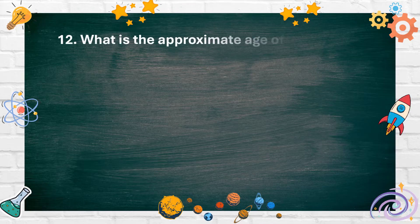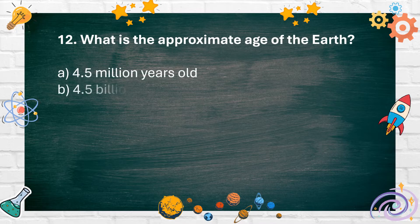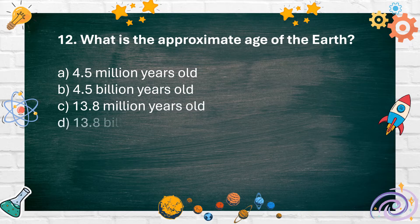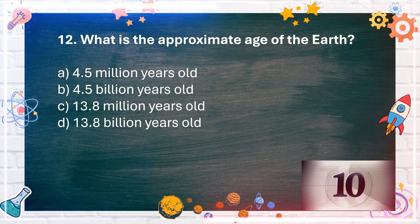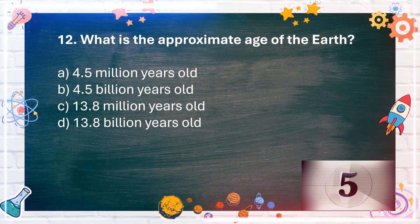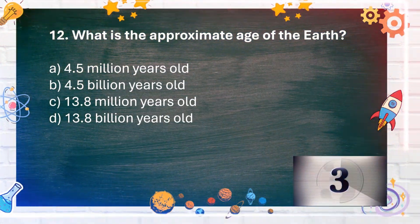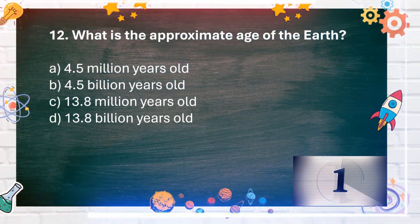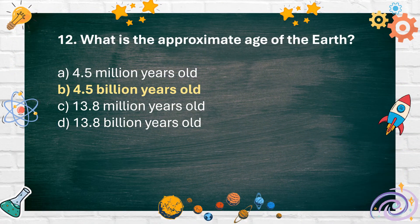Number 12. What is the approximate age of the Earth? A. 4.5 million years old. B. 4.5 billion years old. C. 13.8 million years old. D. 13.8 billion years old. The answer is B. 4.5 billion years old.